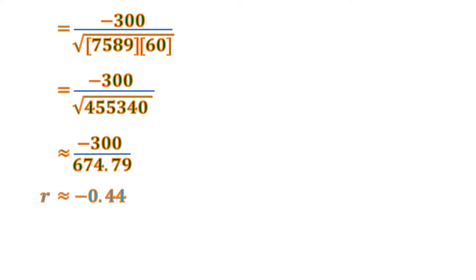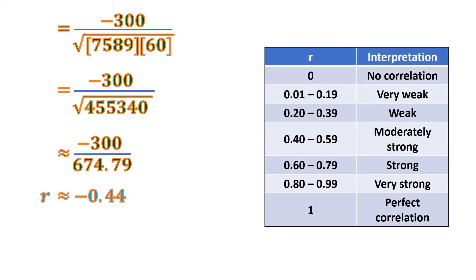Now what does it mean by this? Let's look at the table to interpret this R. If R is 0, there's no correlation. If R is 0.01 to 0.19, it's very weak correlation. If it's 0.2 to 0.39, it's weak correlation. If it's 0.4 to 0.59, it's moderately strong correlation. If it's 0.6 to 0.79, it's strong correlation. If it's 0.8 to 0.99, it's very strong correlation. And if it's 1, then it's going to be a perfect correlation.